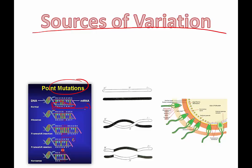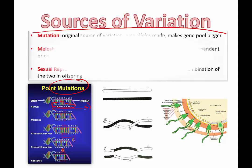Mutations are especially important for asexually reproducing organisms because it's one of the only ways that you get variation from them. For sexually reproducing organisms we obviously have meiosis.